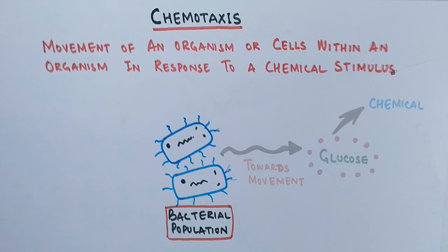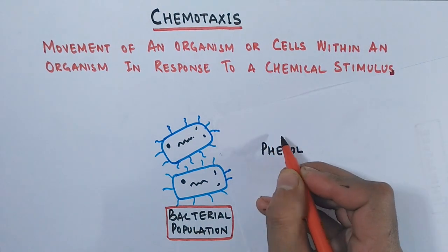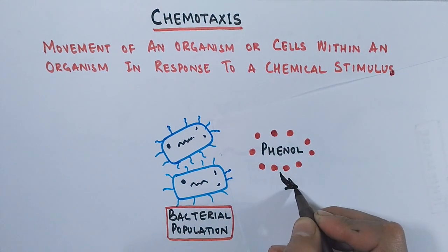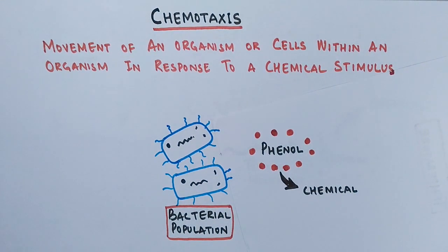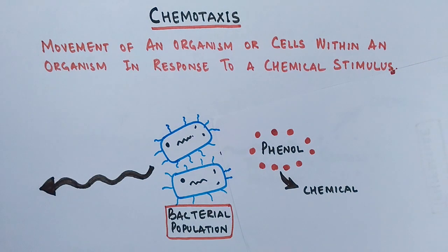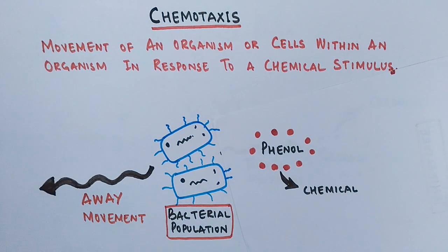On the other hand, if the same bacterial population detects a toxic chemical — suppose phenol is in its vicinity — the bacteria will not move toward the phenol because it is toxic to them. Instead, they will move away from it. This is negative chemotaxis shown by the bacterial population. The question of how bacteria detect whether a substance is a repellent or an attractant will be covered in the next part of the video in a signaling pathway.